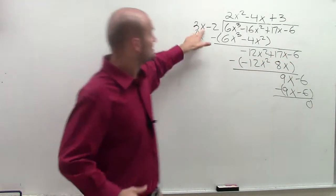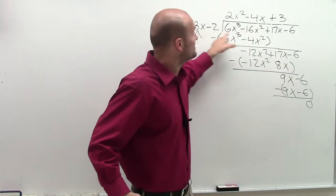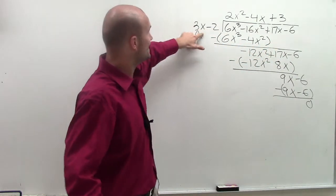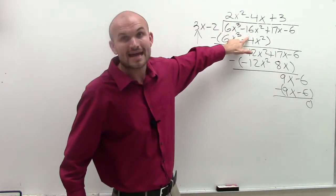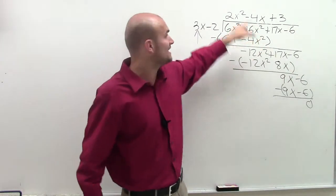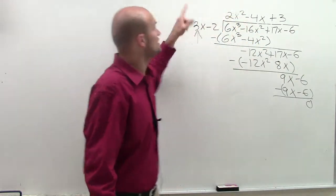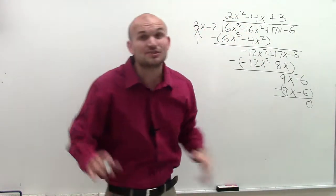And once you know that, since this evenly divides into this, you know that this times this equals that. Your divisor divides into your dividend and gives you your quotient. Your quotient multiplied by your divisor gives you your dividend.